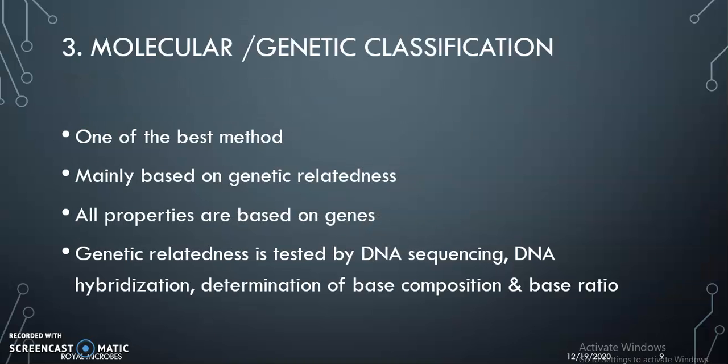Molecular or genetic classification is one of the best methods, mainly based on genetic relatedness. All properties are based on genes. Genetic relatedness is tested by DNA sequencing, DNA hybridization, determination of base composition, and base ratio.